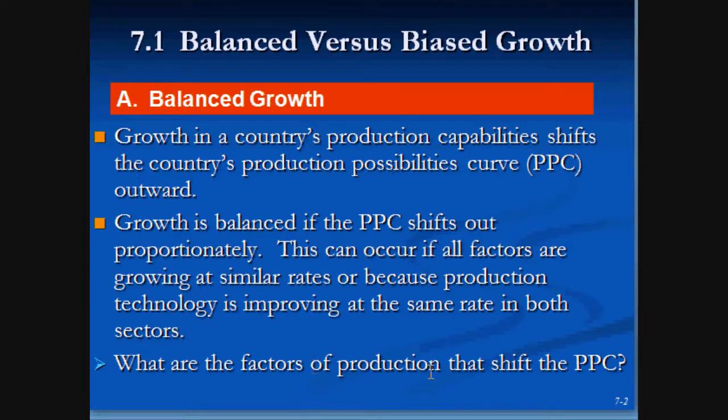What are the factors of production that shift the PPC? Technology is most likely, new available resources, and abundance in land — let's say they cut some forest down to make new homes. That's an increase in resources which you can use to expand your frontier.